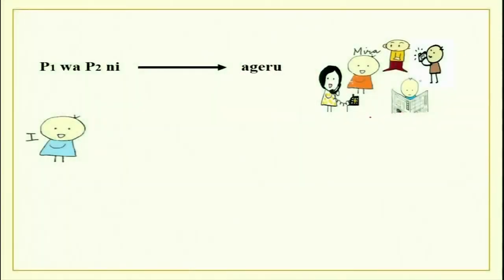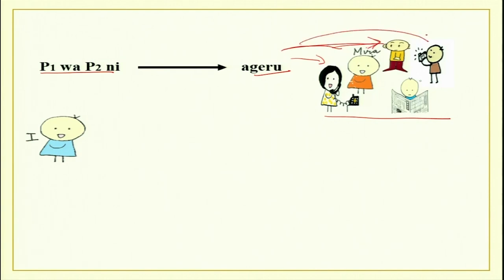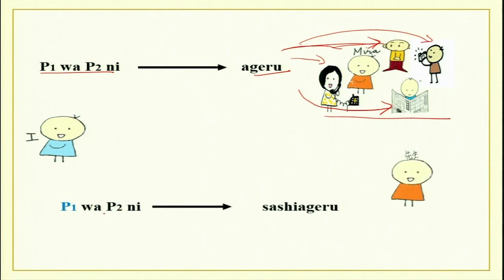The verbs ageru, morau, and kureru also have their honorific counterparts. Since they show respect, you use them in formal situations — with people older than you in age and rank, and in business interactions. You have to be very careful when and how to use them. Person 1 wa person 2 ni agemasu — you can give to your friend, your otouto, brothers and sisters, or your father. When you give to someone senior, you use sashi ageru — Watashi wa sensei ni hon wo sashi agemasu.